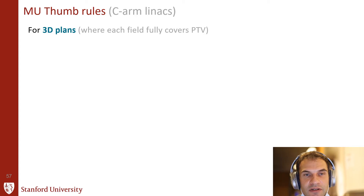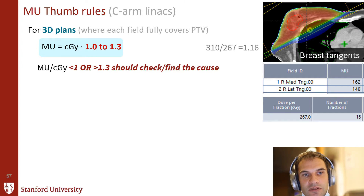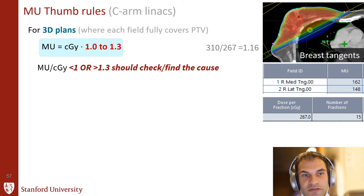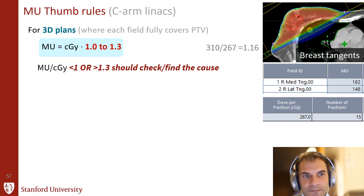Some thumb rules to keep us safe and give general understanding: for 3D plans where each field fully covers the target, such as in breast tangential treatments, the MU and centigray per fraction should be within about 30% of each other. For example, with a breast tangent case delivering 267 centigray per fraction with two fields totaling 310 MU, those values are similar — that's good. If MUs are very different from the dose per fraction in 3D plans, you should check it, as it can be a red flag for a mistake.